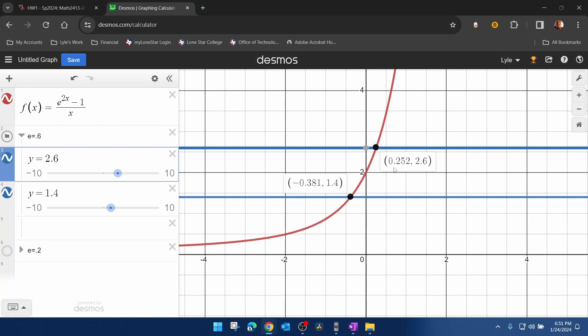Okay, so looking at the two x's, we have 0.252 and negative 0.381. If we take the absolute value of this negative x here, that would give us the distance left of 0. And then the 0.25 here is the distance right of 0. And then really all you have to do is pick which one is smaller, which is the 0.252.